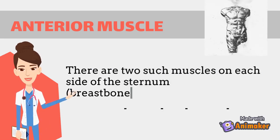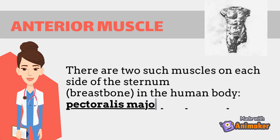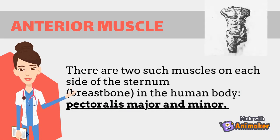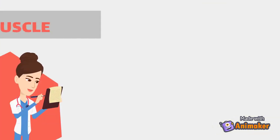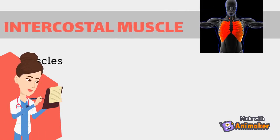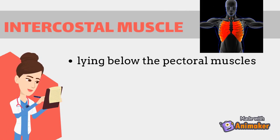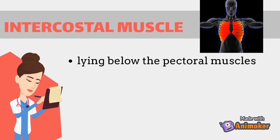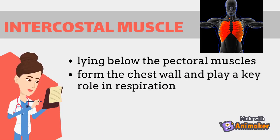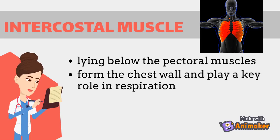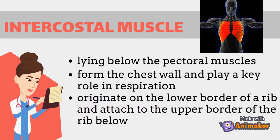There are two pectoral muscles on each side of the sternum: the pectoralis major and the pectoralis minor. The second chest muscle group is the intercostal muscles, which lie below the pectoral muscles. The intercostal muscles form the chest wall and play a key role in respiration. All intercostal muscles originate on the lower border of their respective ribs and attach to the upper border of the rib below.